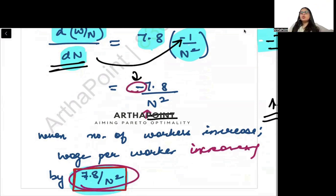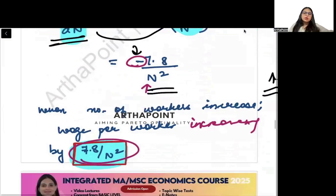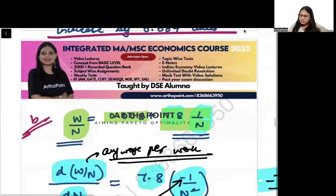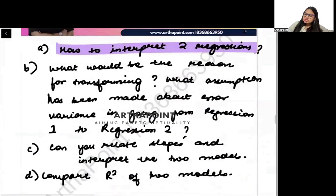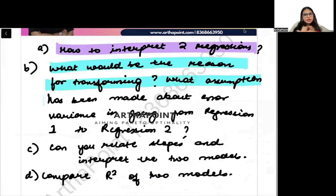That is one negative relation, but there is also a negative sign which makes the relation positive. Next part asks what would be the reason for transformation. Heteroscedasticity. Whenever we divide, heteroscedasticity is present.